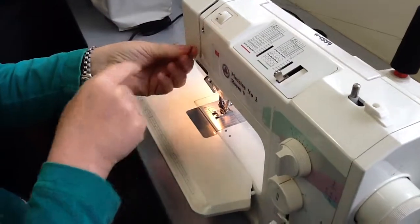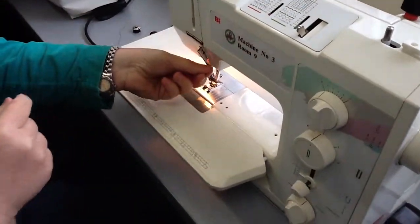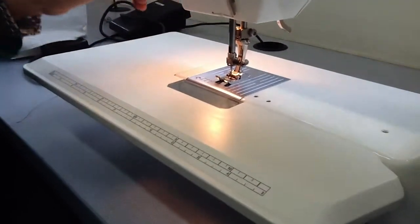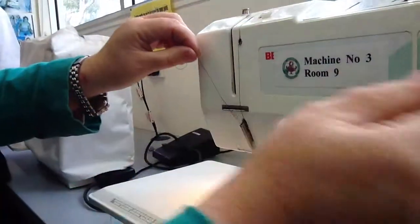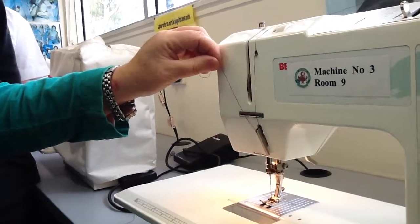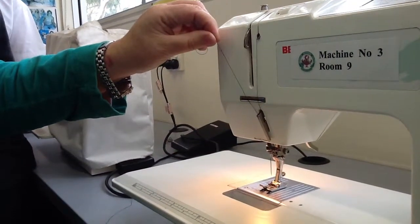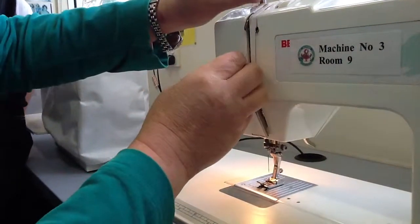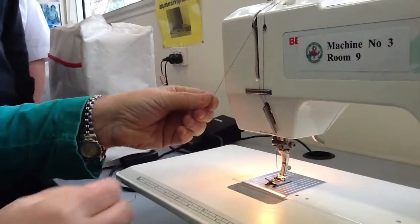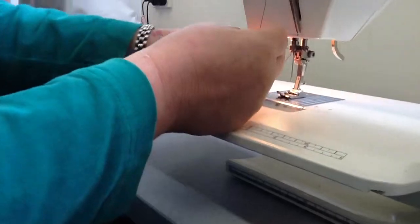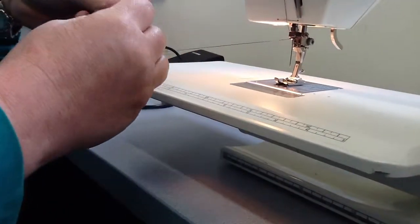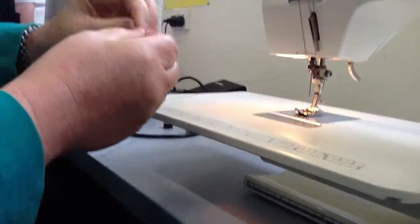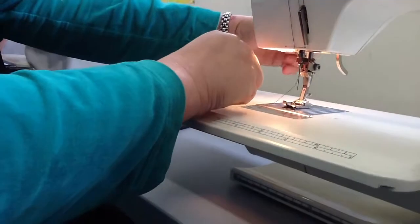So we start at the top, follow the sequence down, under the hook. I now need to get it into that hook, so I move the hook so it comes up to the top. It slots in, down to the little hook in the bottom, and then I need to thread it through the needle.